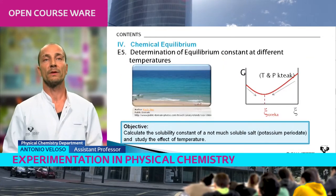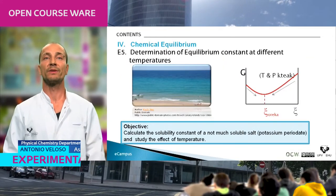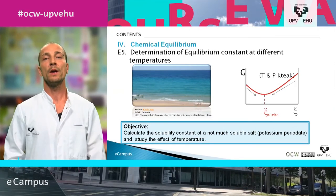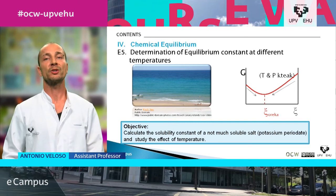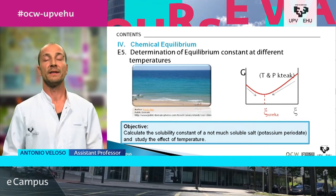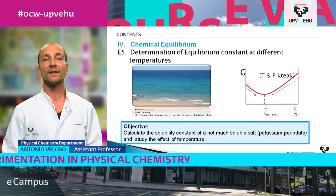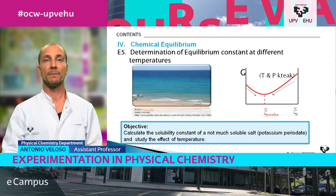The fourth lesson is about chemical equilibrium. The experiment is entitled Determination of Equilibrium Constant at Different Temperatures. The main objective is to calculate the solubility constant of a sparingly soluble salt — in this case, potassium periodate — and to study the effect of temperature.